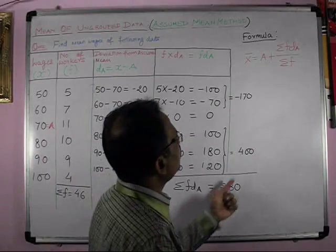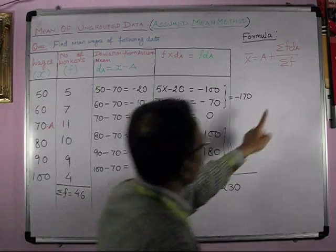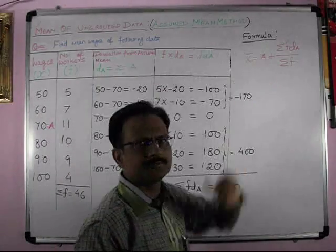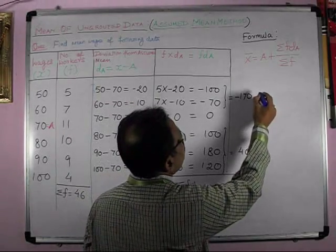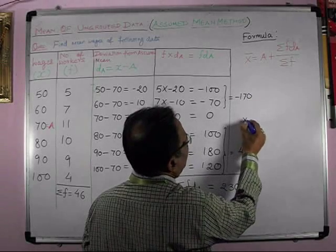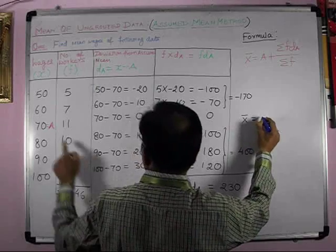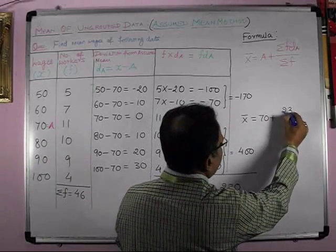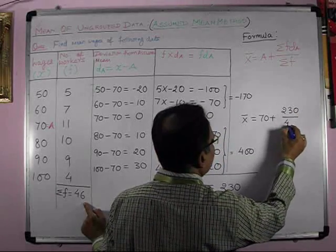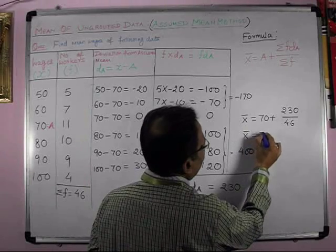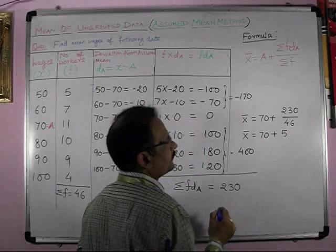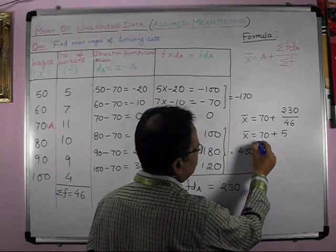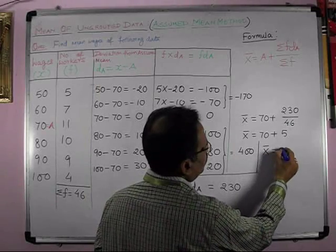Now, these values, we have F DA, we have to put here. Summation of F, we have to put here. And assumed mean 70, we have to put here. X bar is equal to A is 70 plus summation of F DA is 230. And summation of F is 46. So, X bar is equal to 70 plus 5. Now, we get X bar is equal to 75.